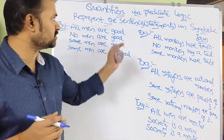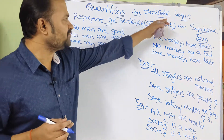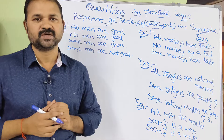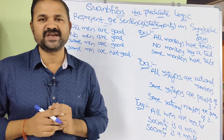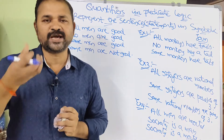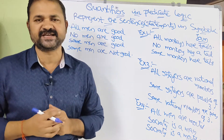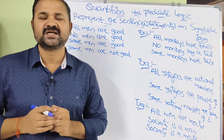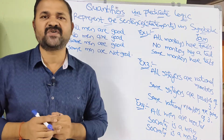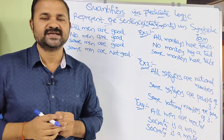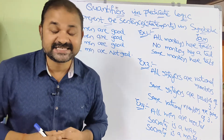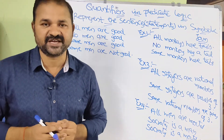Let us discuss quantifiers in predicate logic. We know that we have two types of quantifiers. The first one is the universal quantifier, and the second one is the existential quantifier.